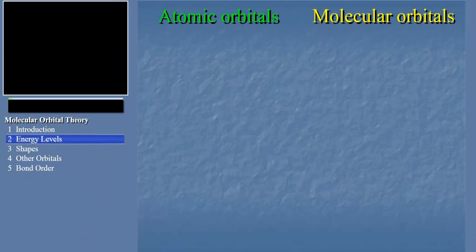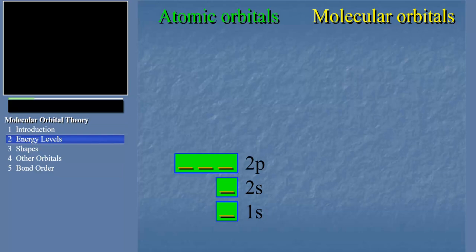Another important way in which atomic orbitals and molecular orbitals are similar is that you can draw energy level diagrams for both of them. For atomic orbitals, we would draw the energy level of the 1s, then the 2s, then the set of 2p's, then the 3s, then the 3p's, and so on. In similar fashion, we can draw energy level diagrams for molecular orbitals. Here's an example.